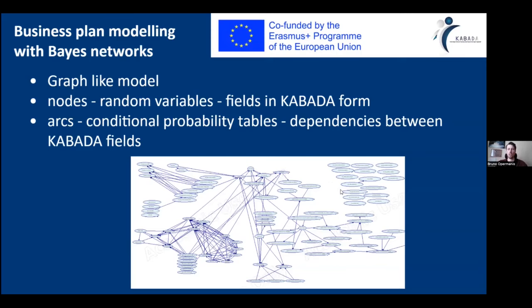The arcs are conditional probability tables, which describe the dependencies between the fields.